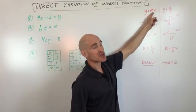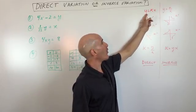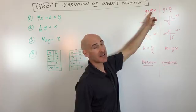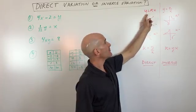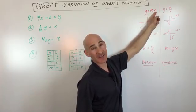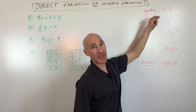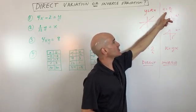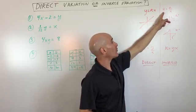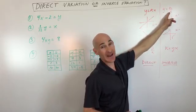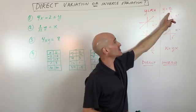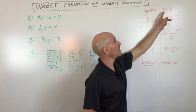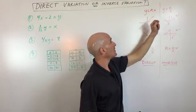Direct variation equations are in the form y equals k times x, where k is a constant. Some books will say y equals a times x, where a is a constant. Inverse variation equations are in the form y equals k divided by x. Notice that x is in the denominator, whereas in direct variation x is in the numerator. Again, k is just a constant.